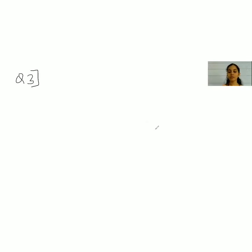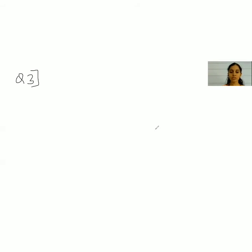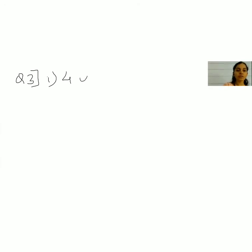Question 3 uses truth tables from the first session. We write the truth values of the following. The first one: 4 is odd or 1 is prime. '4 is odd' is p, and '1 is prime' is q. The symbolic form is p or q.